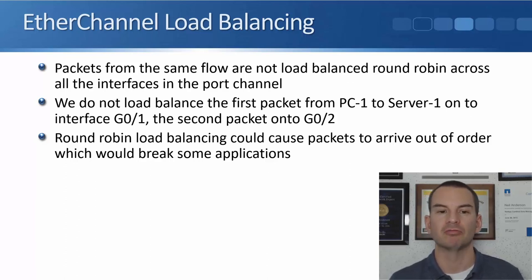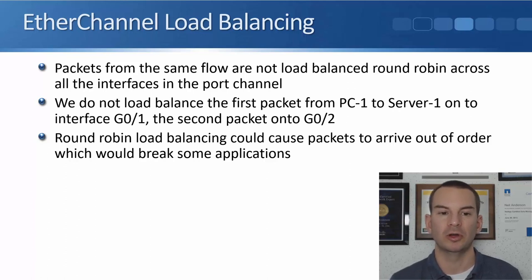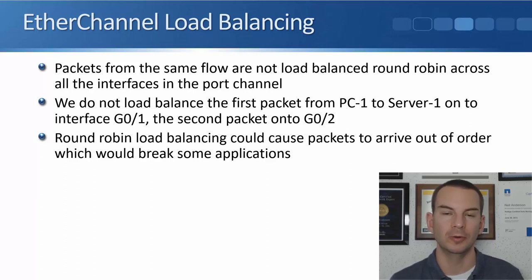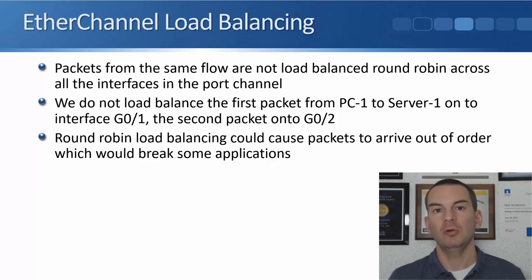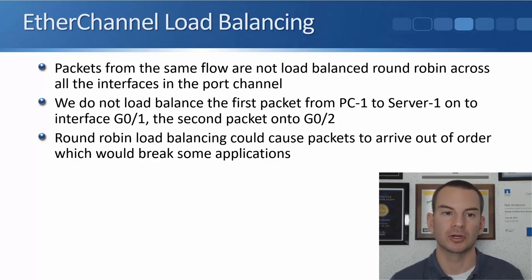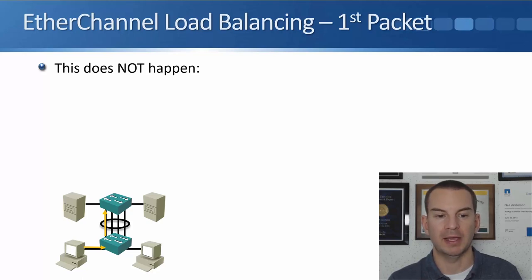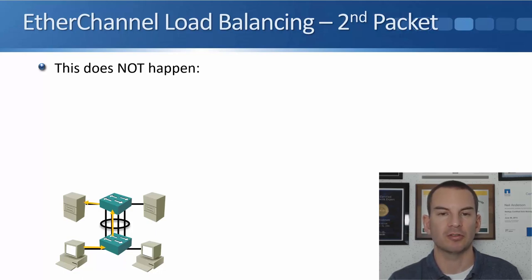Packets from the same flow are always load balanced on the same interface — not round-robin across all interfaces in the port channel. We don't send the first packet from PC1 to Server 1 over GigabitEthernet 0/1 and the second packet over GigabitEthernet 0/2. The reason is that round-robin load balancing could cause packets to arrive out of order at the destination, which would break some applications.